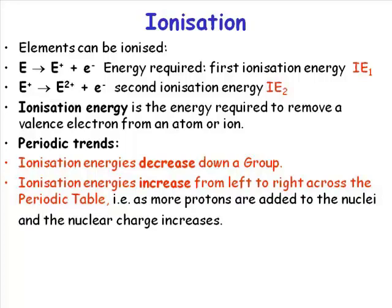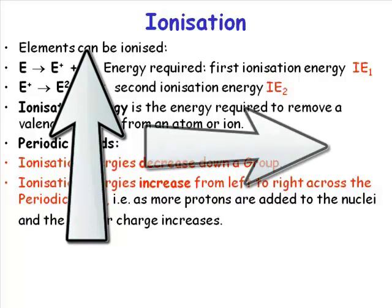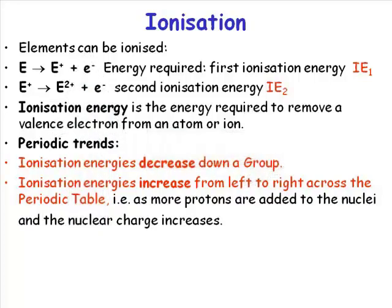It's the same concept. The effective nuclear charge increases from left to right across the periodic table. If the effective nuclear charge is increasing, the electrons are feeling more nuclear charge — they're being held closer and more strongly by the atom — so it requires more energy to remove them. Ionization energies increase from left to right across the periodic table because the effective nuclear charge is increasing from left to right.